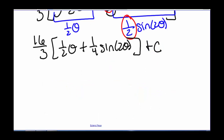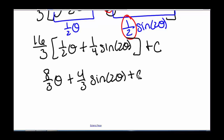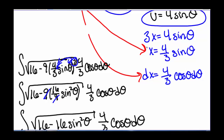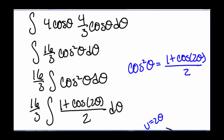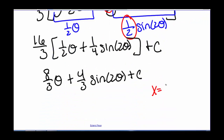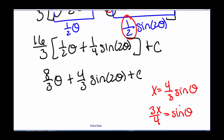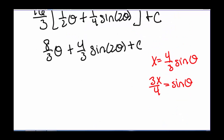And we need our constant c. Multiplying through by the 16 thirds, we get 8 thirds theta, plus 4 thirds sine of 2 theta, plus our constant c. Now we need to switch back to our x's, so we need to solve for theta and sine of 2 theta. Way back up here, we said x is 4 thirds sine of theta. So if we know x is 4 thirds sine of theta, then that means 3x over 4 equals sine of theta, and therefore theta equals the inverse sine of 3x over 4.